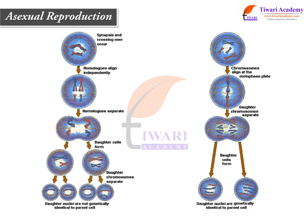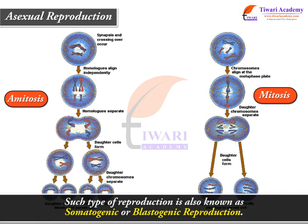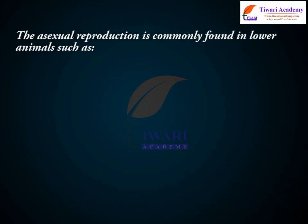During asexual reproduction, the body's somatic cells divide; their nucleus divides either by mitosis or amitosis. Therefore, this type of reproduction is also known as somatogenic or blastogenic reproduction.